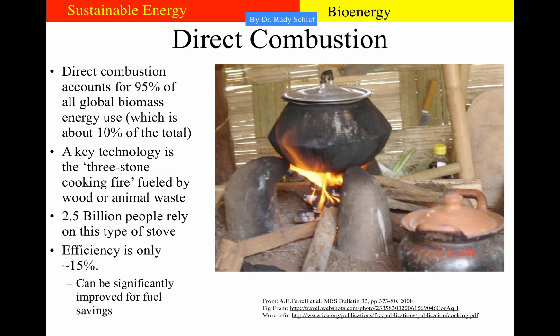Direct combustion of biomass accounts for 95% of all global biomass energy use, which is 10% of total energy use. Most of the biomass combusted is used for cooking. There are about 2.5 billion people that rely on the three-stone cooking fire fueled by wood or animal waste. The efficiency of this type of stove is only 15%, because a lot of the hot combustion products escape without transferring heat to the food or water. If one could double the efficiency of such stoves, this would make a big difference.